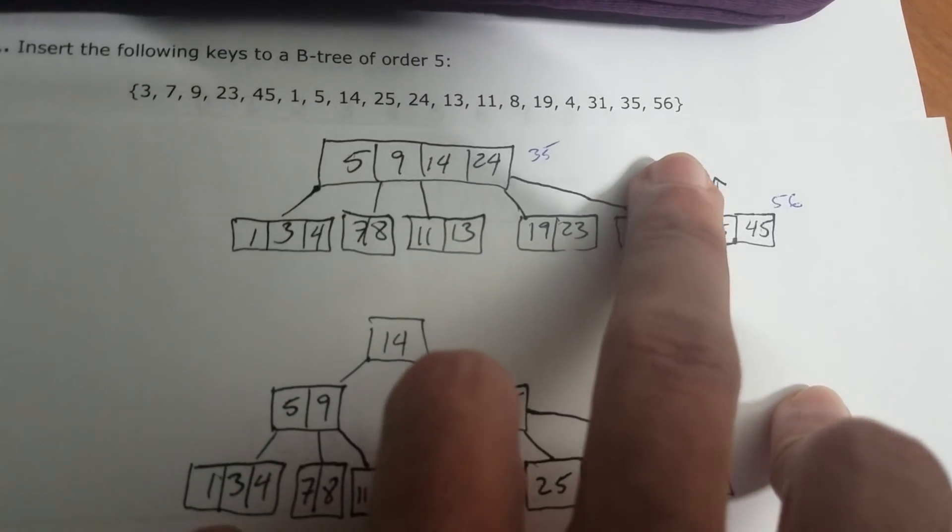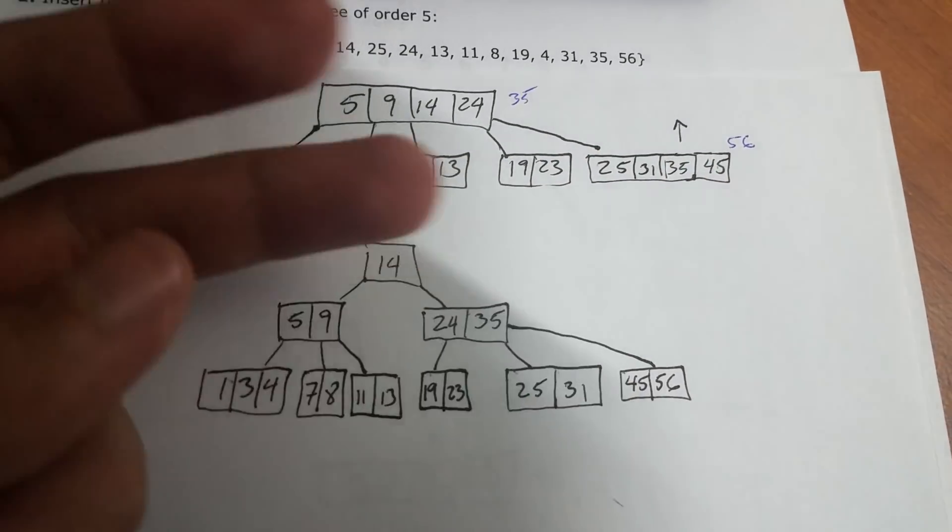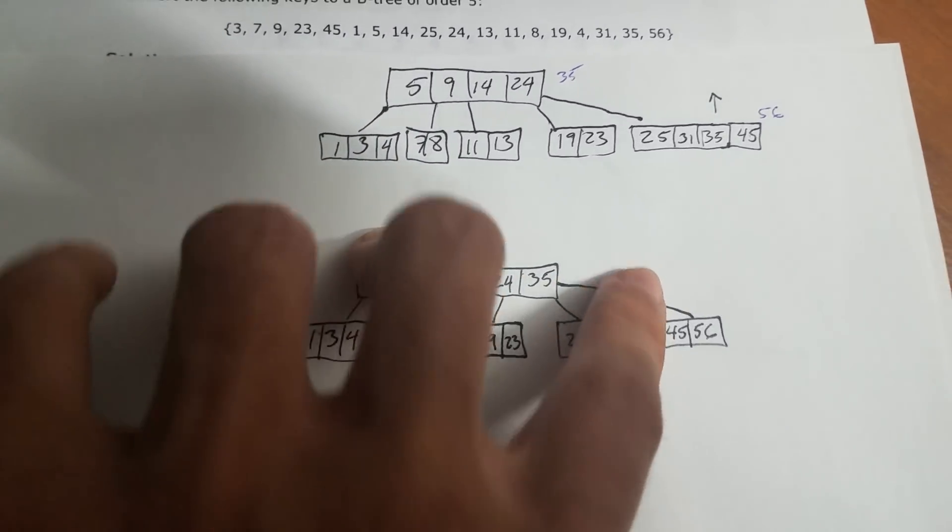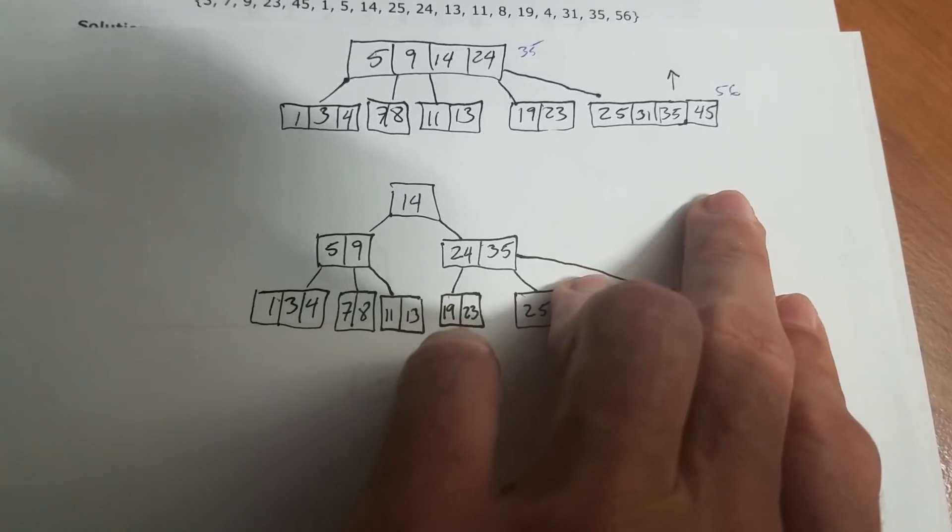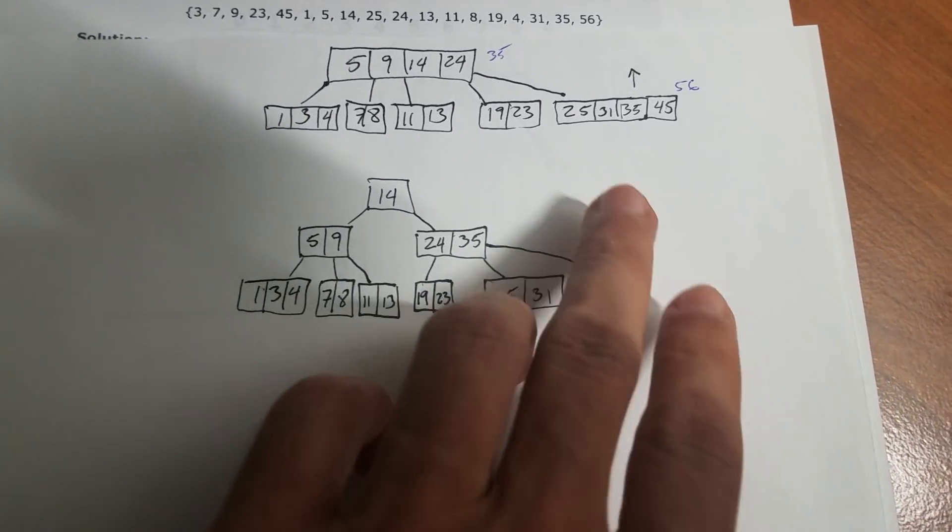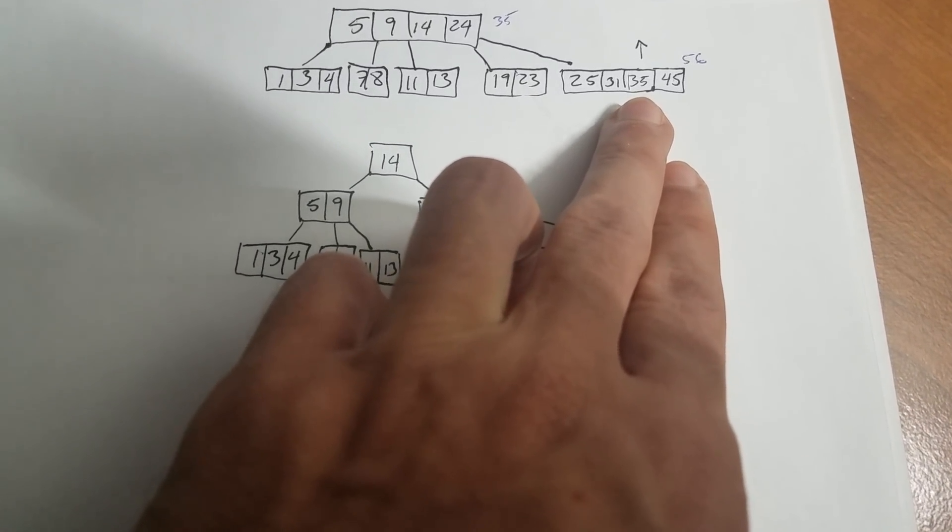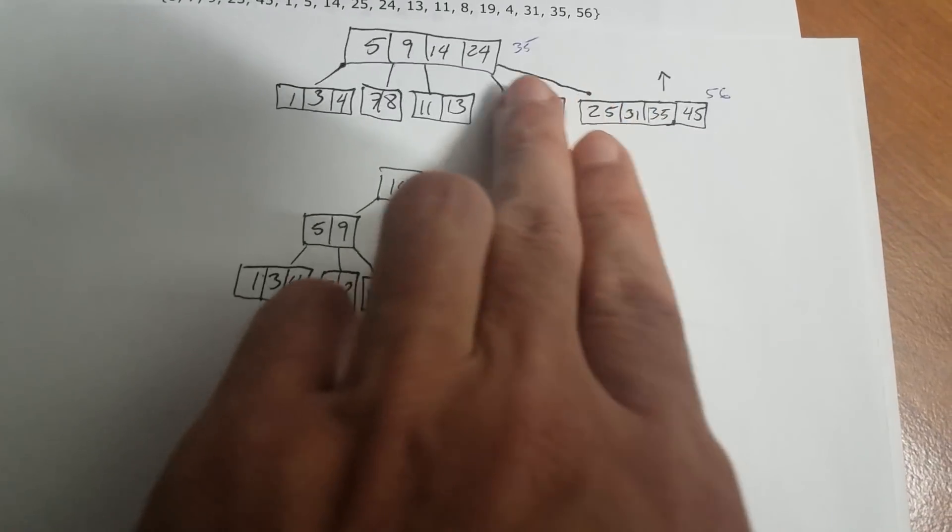Now, when the 56 comes, is when it creates a little mess. So we need to start from the bottom to the top so it doesn't create any conflict. So the middle number here is going to be 35, right? So 35 will get promoted here.